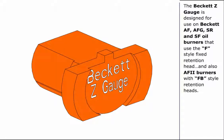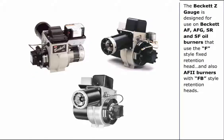The Beckett Z gauge is designed for use on Beckett AF, AFG, SR and SF oil burners that use the F style fixed retention head and also AF2 burners with FB style retention heads.